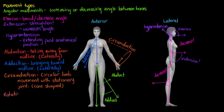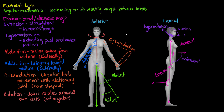We'll cover one more type of movement in this video, but it's not an angular movement — it's a movement type of its own called rotation. Rotation is when a joint rotates around its own axis. We're not increasing or decreasing the angle between different joints, so it can't be angular. A good example is shaking your head — moving your head side to side, looking to your left or your right. In the next video, we're going to take a look at our last movement type, which is gliding movements.